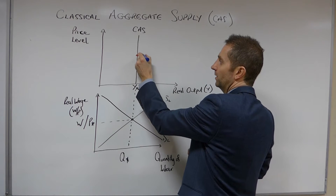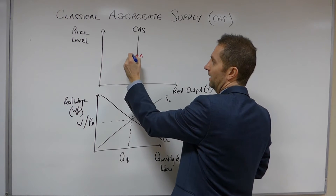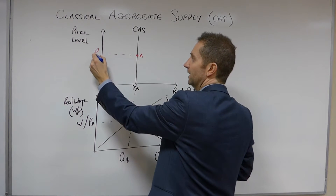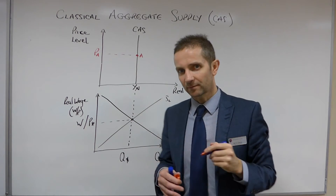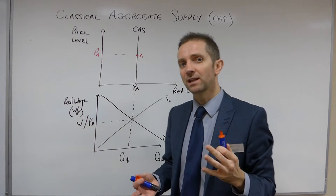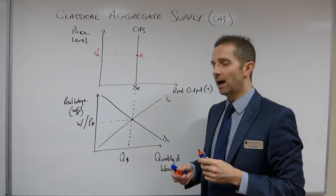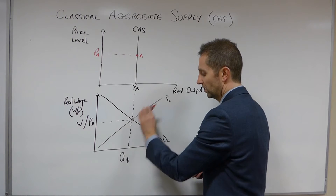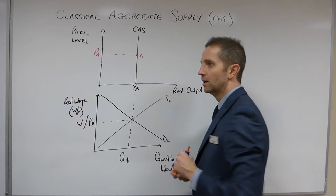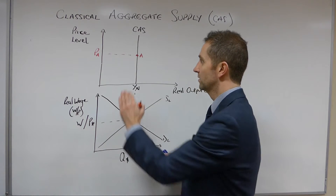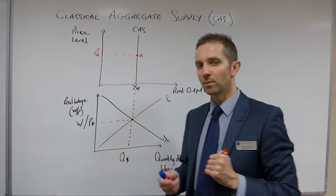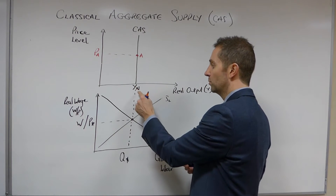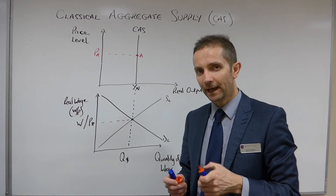Let's say that point A gives rise in the classical scenario to a price level of PA, and that then clears the labour market at this point Q* W/P*. So PA clears the labour market at this point and as a consequence real output will obviously be at YN.